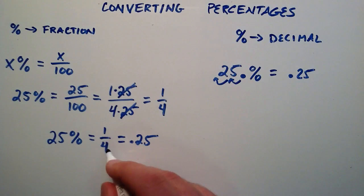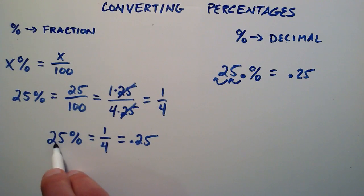And if we were to plug this into our calculator, 1 divided by 4 is equal to point 25. So here's three different ways that you can write the number 25 percent.